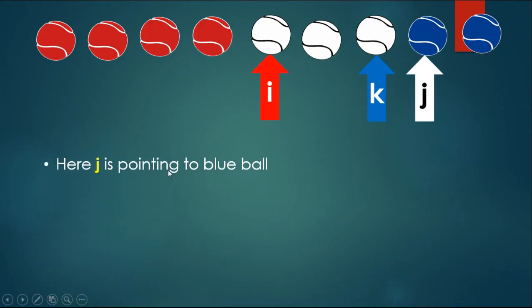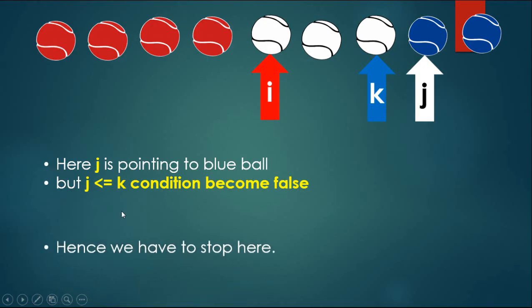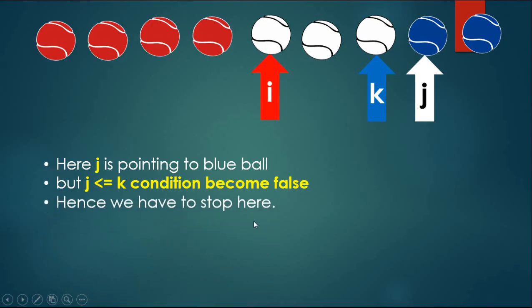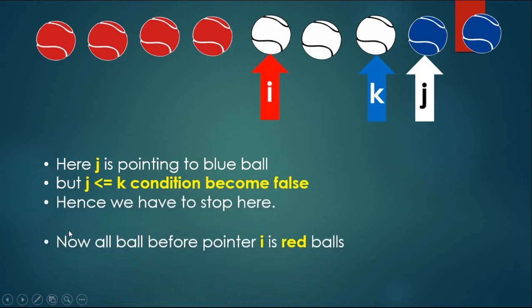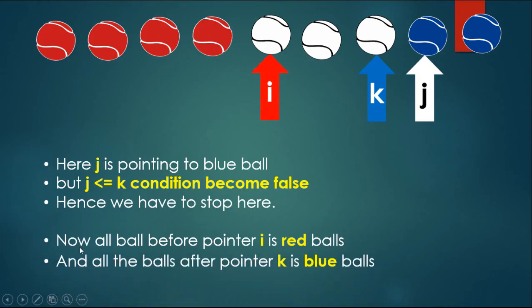Here j is pointing to a blue ball but the j less than or equal to k condition becomes false, hence we stop here. Now all balls before pointer i are red balls, all balls after pointer k are blue balls, and the remaining are white balls.